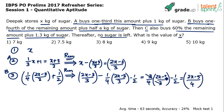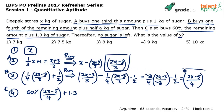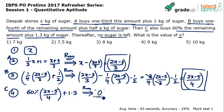Now comes step four: C buys 60% of the remaining amount, which is (2x − 5)/4, plus 1.3 kg. After C leaves, nothing is left — remaining equals 0. So we set up the equation: (2x − 5)/4 minus three-fifths of (2x − 5)/4 minus 1.3 equals 0. This gives us one equation in terms of x which we can solve.